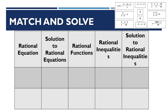The five columns are: rational equation, solution to rational equations, rational functions, rational inequalities, and solution to rational inequalities. Let's begin with f(x) = (x² − 2x + 4) / x. Since we have the function notation f(x), it will fall under column 3, which is rational function.